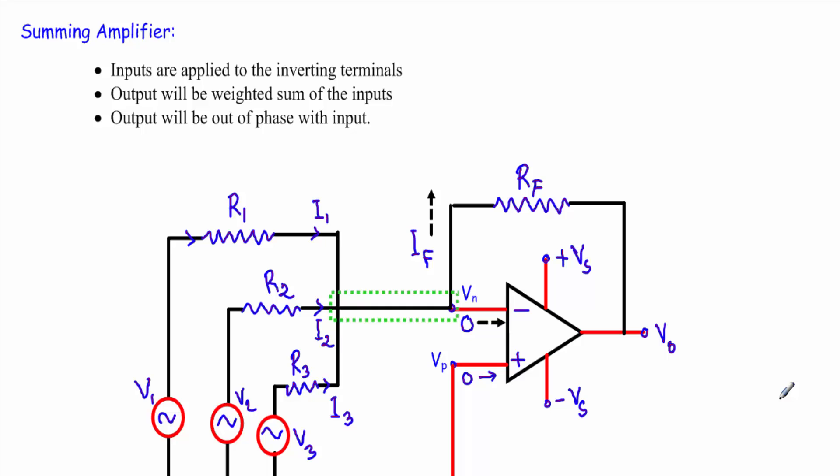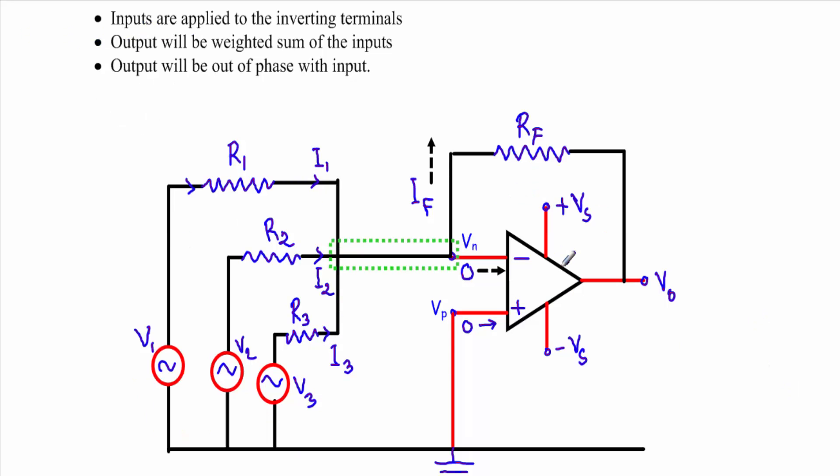Now I will show you the summing amplifier, or summer circuit, or adder circuit of an operational amplifier. The concept of a summing amplifier is that it will take several input voltages at the input side, and at the output we will get an output voltage which will be equal to the weighted sum of the input voltages.